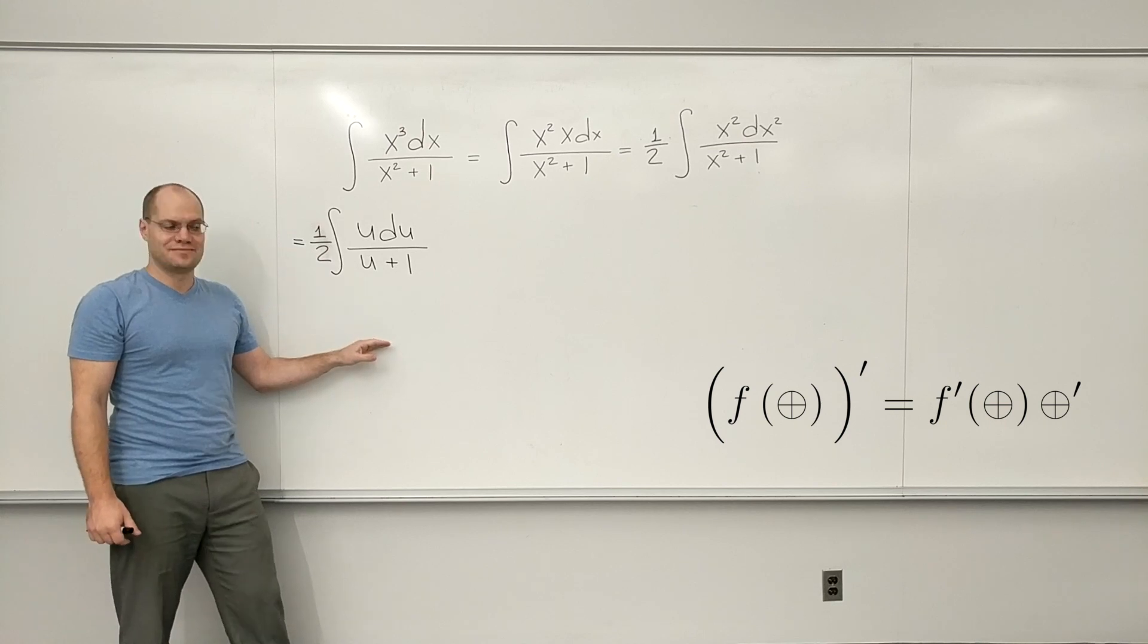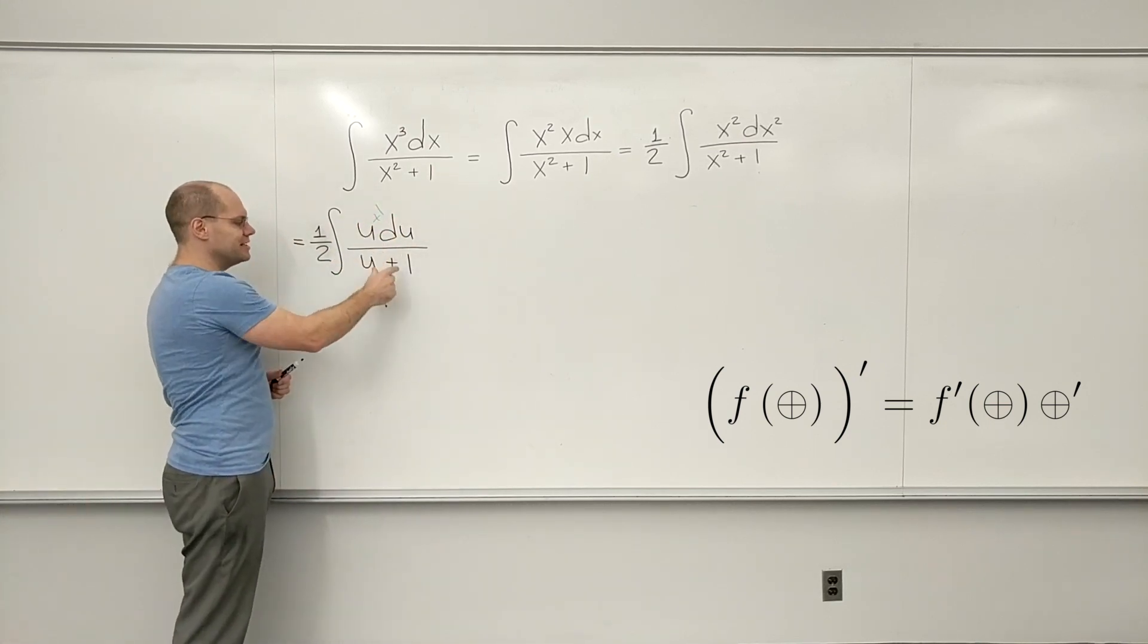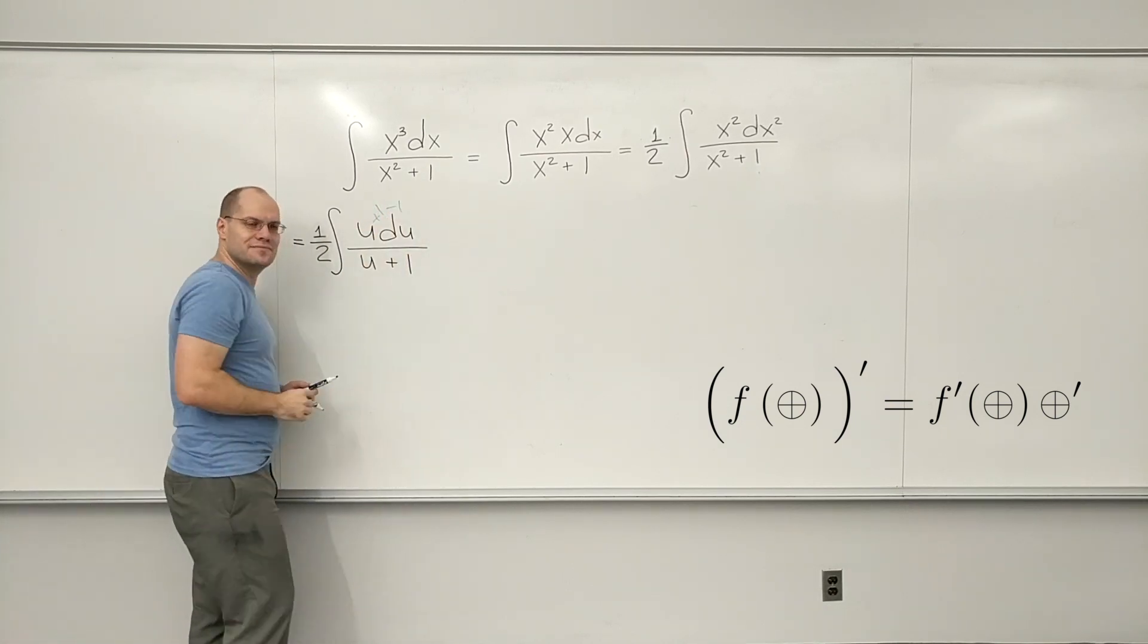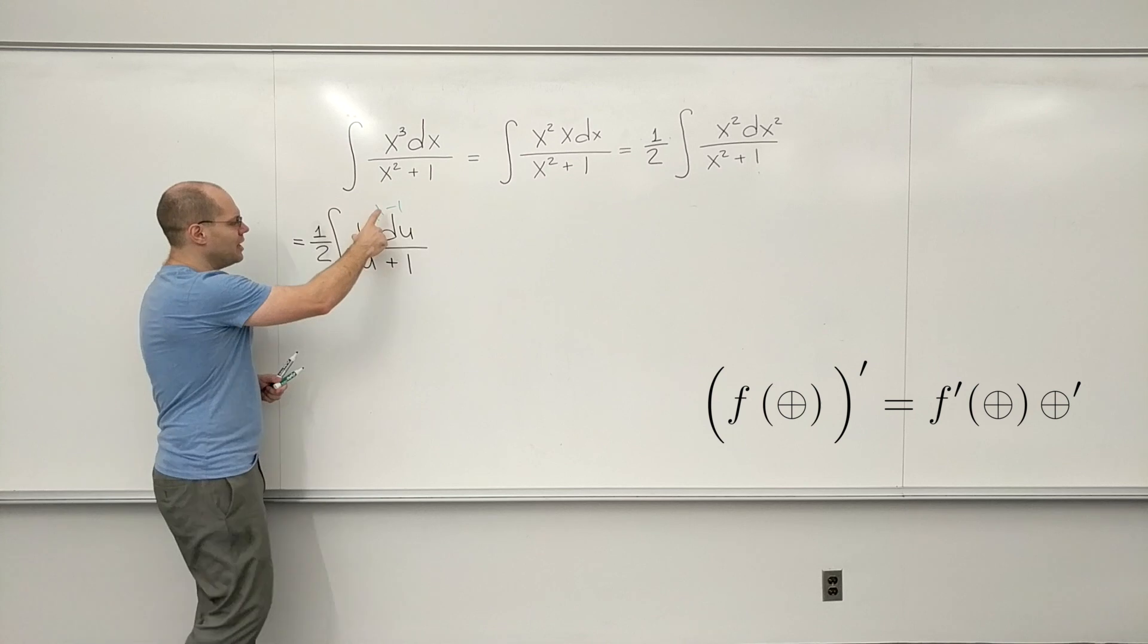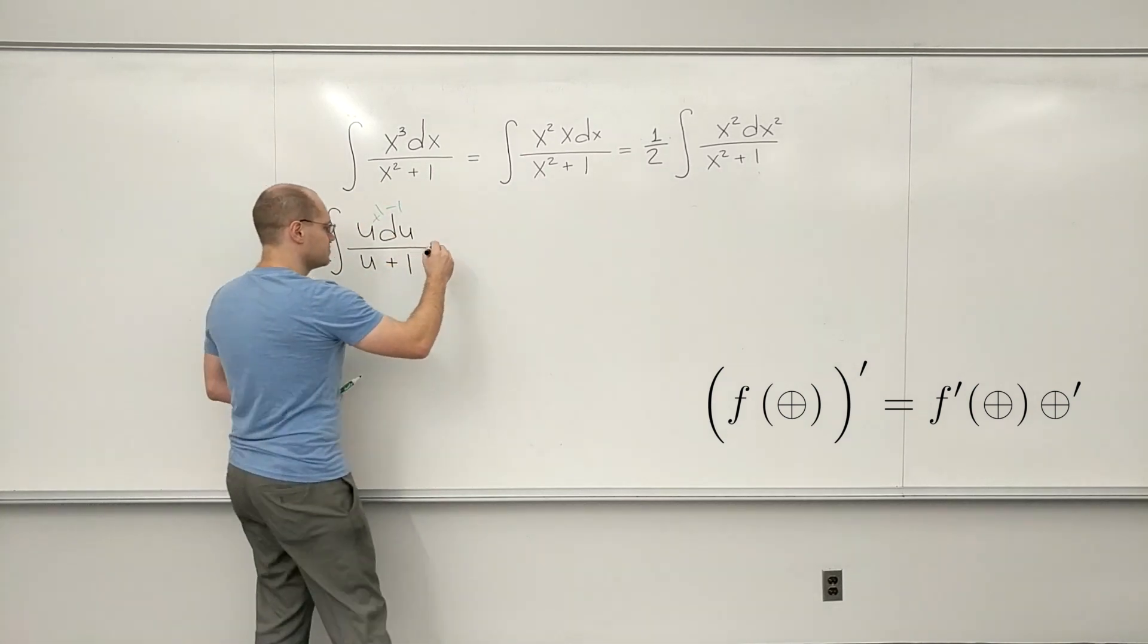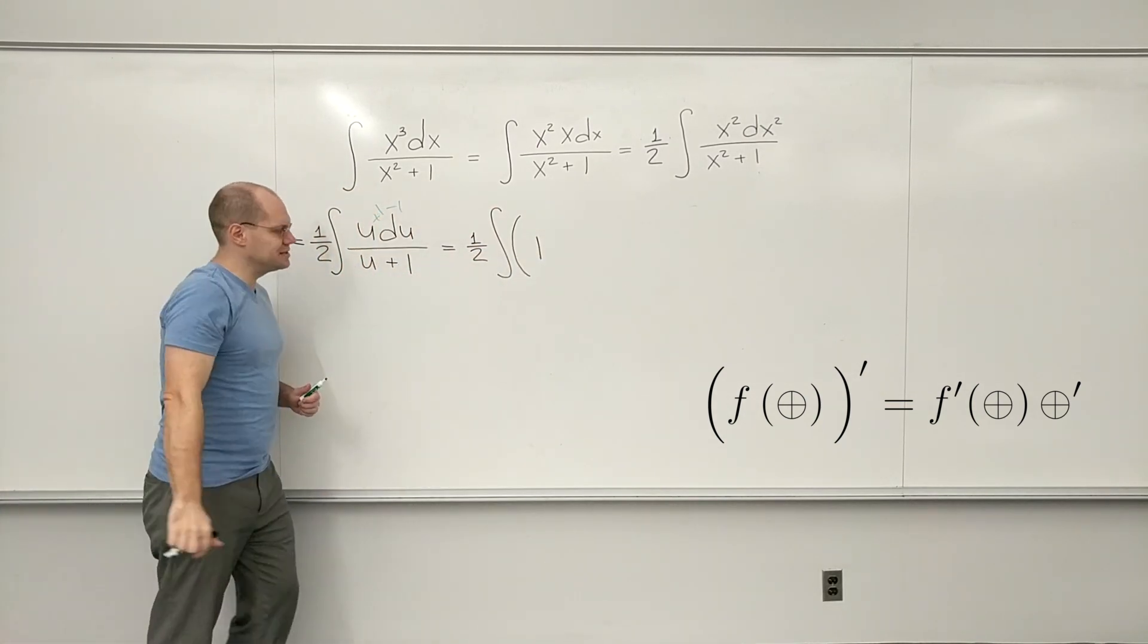Yes. Add and subtract 1. You would add 1. Making the numerator exactly the same as the denominator. And subtract 1. And when you add 1, you end up with u plus 1 divided by u plus 1. That's just 1. And then minus 1 divided by the denominator.